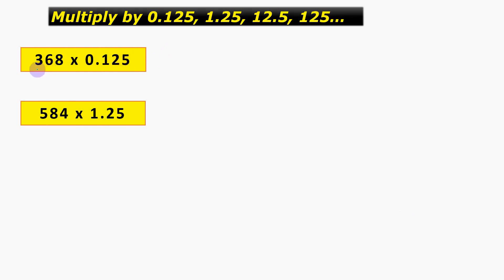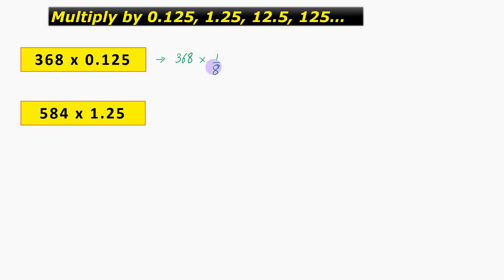The first question is 368 into 0.125. This can be written as 368 into 0.125, which is actually nothing but 1 by 8. So, what we need to do is we need to divide 368 by 8.